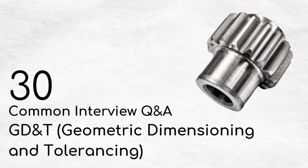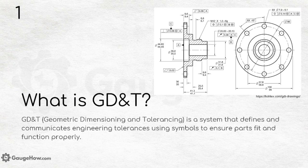Welcome to Gauge How. In this tutorial, we are going to see 30 common interview questions and answers related to GD&T — that is Geometric Dimensioning and Tolerancing. GD&T is a system that defines and communicates engineering tolerances using symbols to ensure parts fit and function properly.